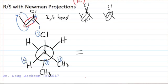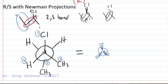What we've got to realize is that a Newman is really these three bonds coming at us and then the back bond going away from us.